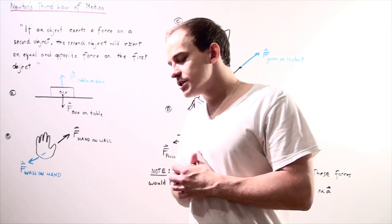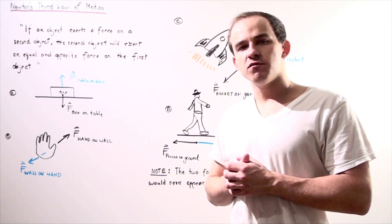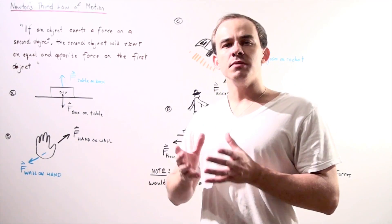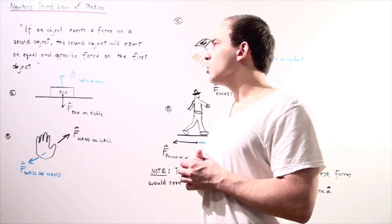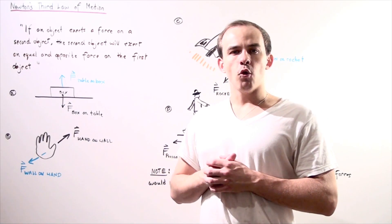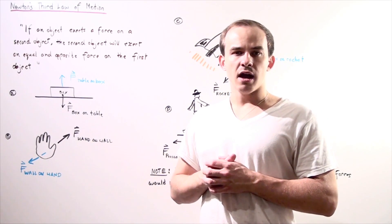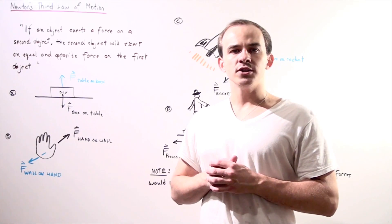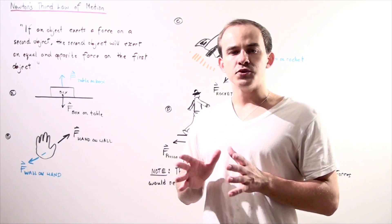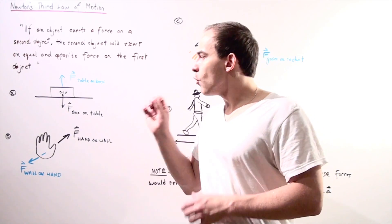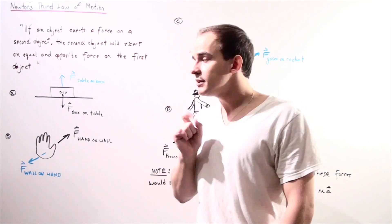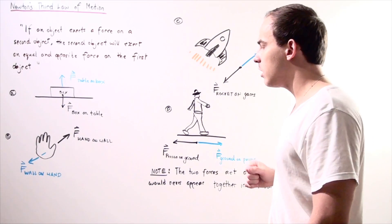We already spoke about Newton's first and second laws of motion. Now, let's talk about the third law of motion, which can be described using the following statement: if an object exerts a force on a second object, the second object will exert an equal but opposite force on the first object. Let's look at four very common but very important examples of the third law of motion.